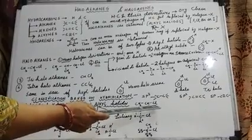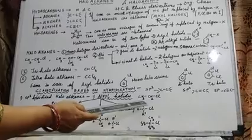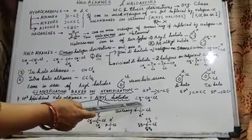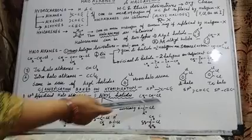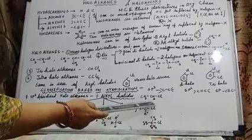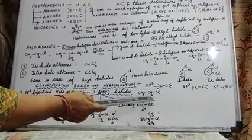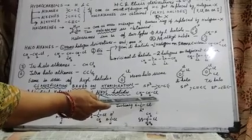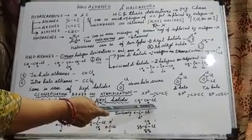Alkyl Halides are represented as RX, where R can be any alkyl group — methyl, ethyl, propyl, butyl, etc. For example, CH3CH2Cl (ethyl chloride) or C2H5Cl are Alkyl Halides. The Carbon attached with the Halogen is showing single bond character, so these are SP3 hybridized Haloalkanes.